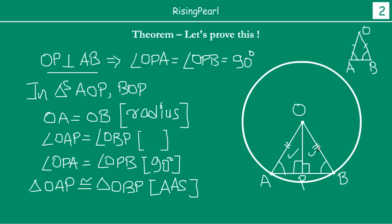So now we have these two triangles congruent. We know that corresponding parts of congruent triangles are always equal. Therefore, we can say that AP is equal to PB. We started by dropping a perpendicular and have now proved that the two lengths AP and PB are equal — meaning this perpendicular is bisecting the chord AB.